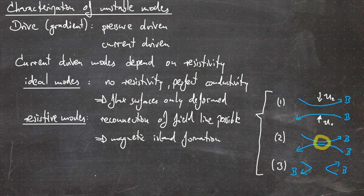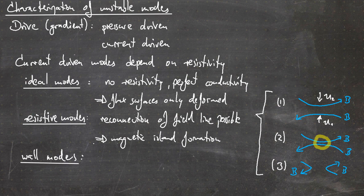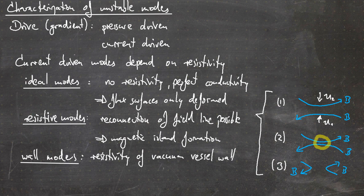There is a third current-driven mode — wall modes — which we won't discuss in detail but should mention. Here the resistivity of the vacuum vessel wall plays a role, as currents can be induced in the metal vessel wall and this can affect plasma dynamics.